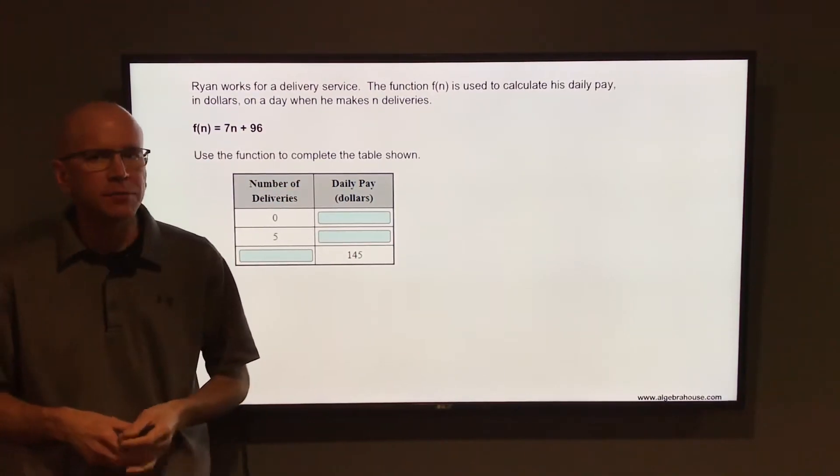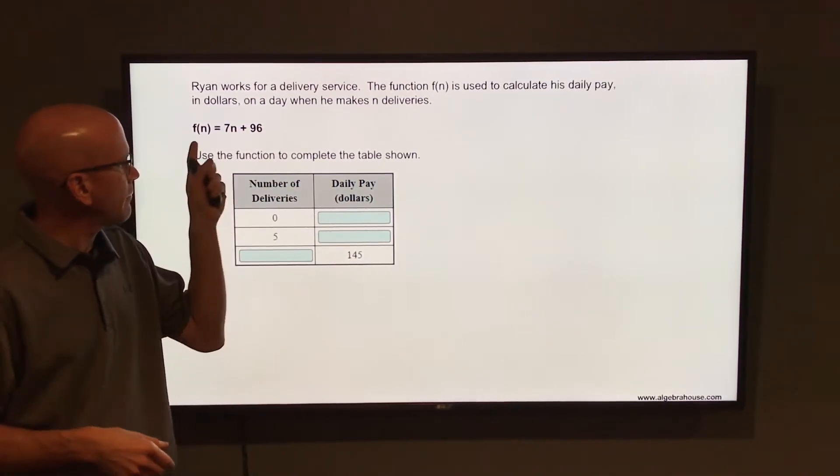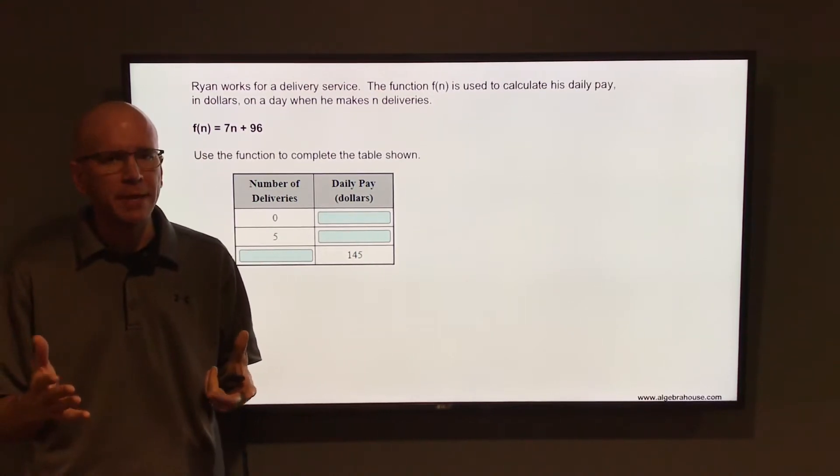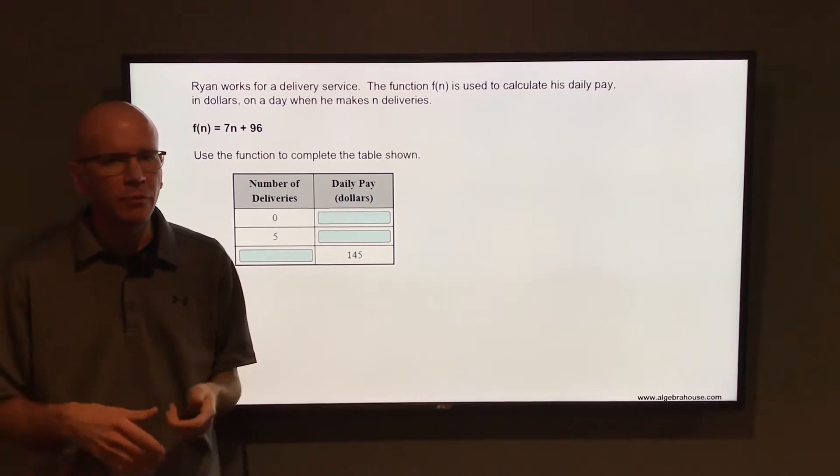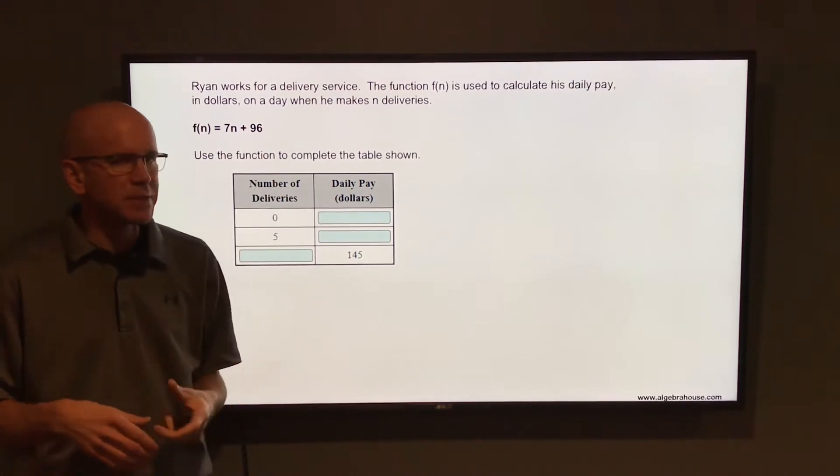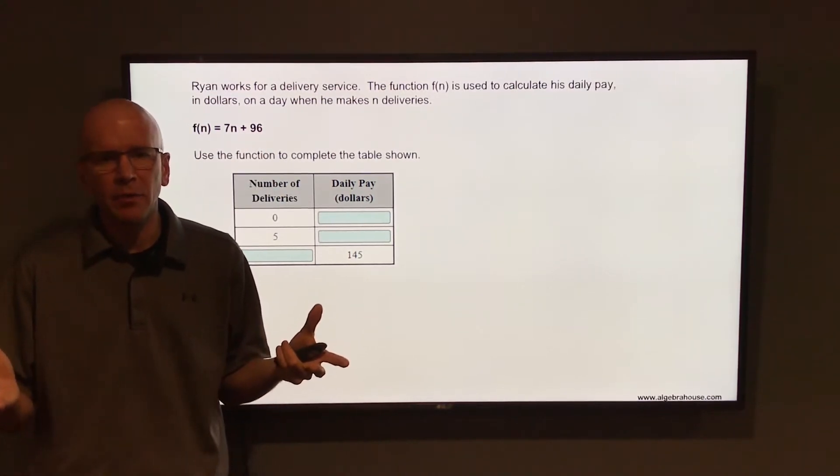So that function f(n) = 7n + 96. f(n) represents the total pay that he makes, 7 represents the amount he makes for each delivery, and 96 represents the amount he makes no matter how many deliveries he makes.